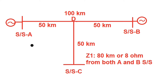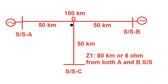Now consider that between substation A and B there exists a tap point D, from which a tapping line runs up to substation C. This is called a tee feeder — just like the letter T. The tap point D is located 50 kilometers from substation A and 50 kilometers from substation B, and the length of the tee feeder up to substation C is 50 kilometers.